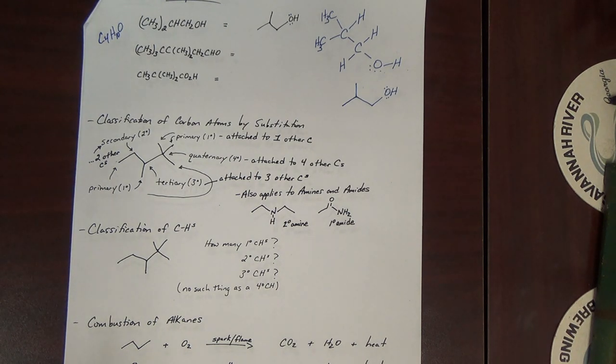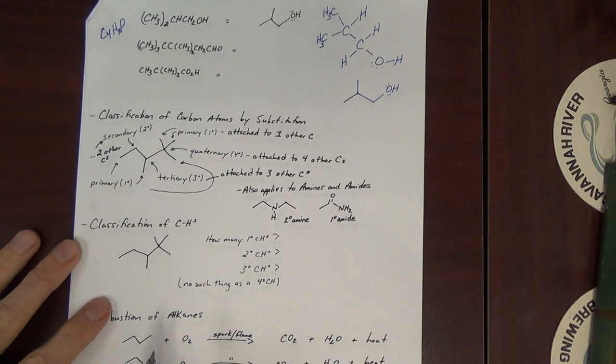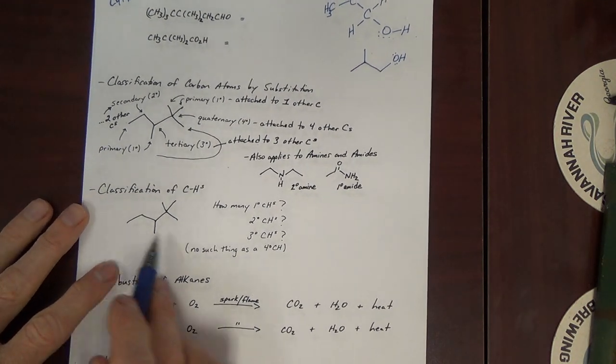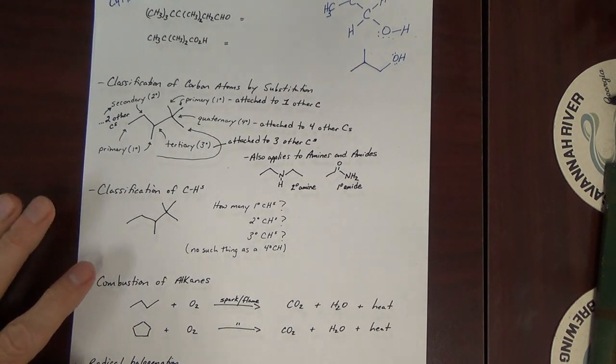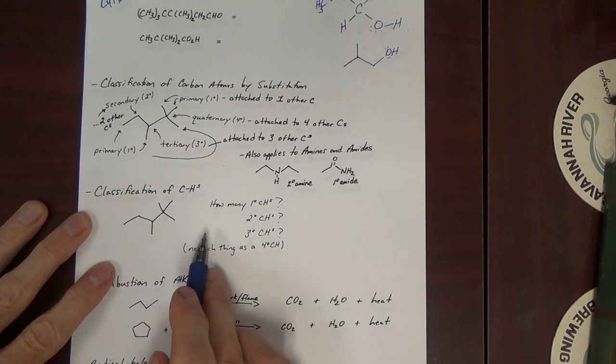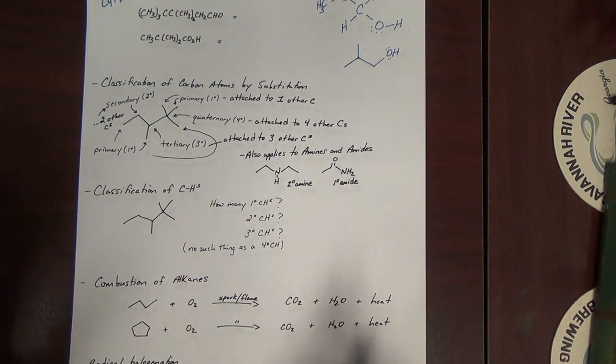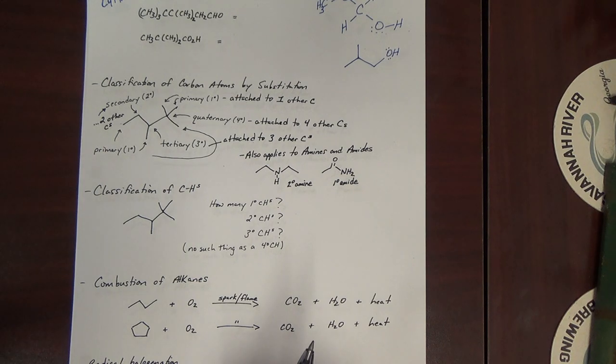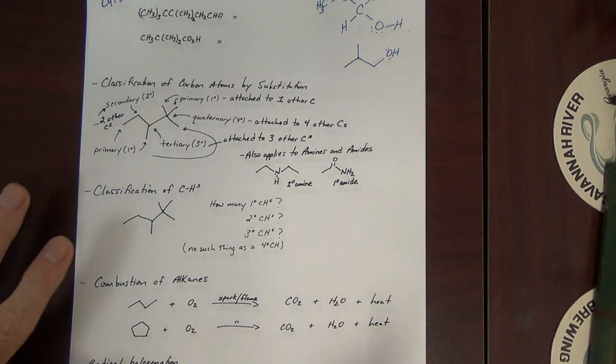Now some books will tell you about how many H's. How many H's are on a tertiary carbon? You've got to be a little careful there. And so I didn't tell you that way. Okay. We can also classify the H's in a molecule. Now H's can only be bonded to one carbon. So we don't classify them all as primary H's. What we do is we classify them based on what type of carbon they're bonded to.